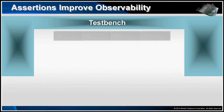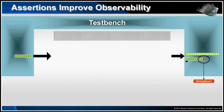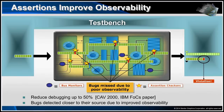So, observability is important. And as I previously stated, assertions improve observability, which means that a bug doesn't have to propagate all the way to the output port to be detected. By detecting bugs closer to their source, assertions are able to reduce debugging time. In fact, a 2000 IBM paper claimed that they were seeing in the order of about a 50% reduction in debugging time due to assertions. I'll share with you other studies in this session that make similar claims.